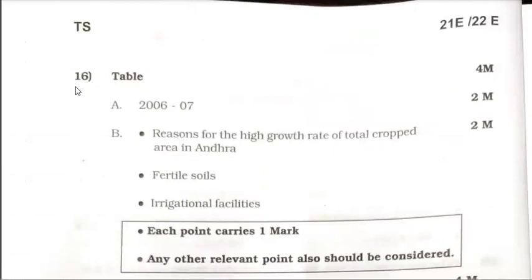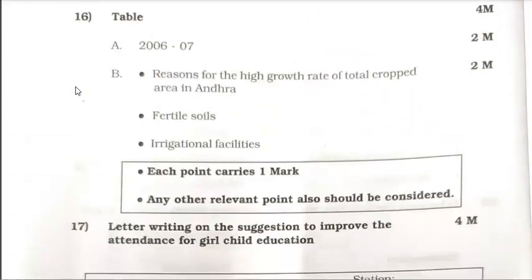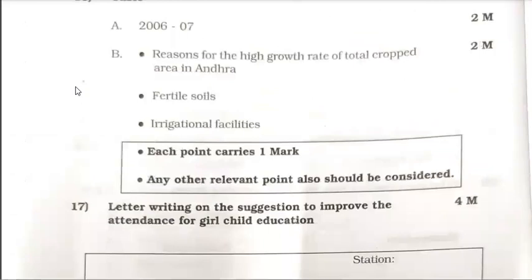The table answers are given — answers A and B. For the A part: 2016 and 2007, carrying 2 marks. For the B part, each point carries 1 mark.